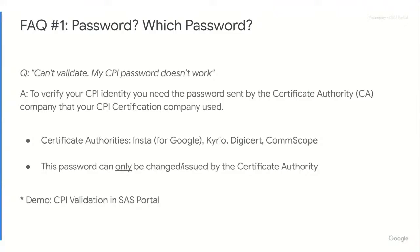The certificate authorities — Google uses Insta; there's also Curio, Digicert, and Comscope — all of these are certificate authorities that may have issued your CPI password. If it's Google, you've been in touch with a company called Insta. Insta is the only company that can change or reissue your Google CPI password that goes with your .p12 file. Don't ask Google to change that — we can't. It's managed by the certificate authority because that password is valid for every SAS in the CBRS ecosystem.